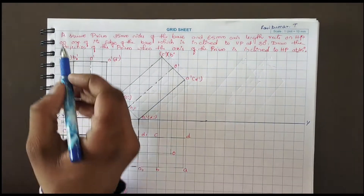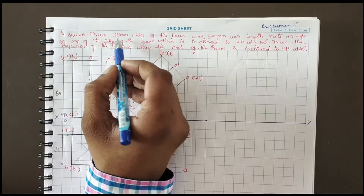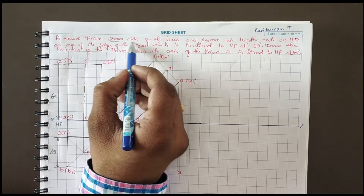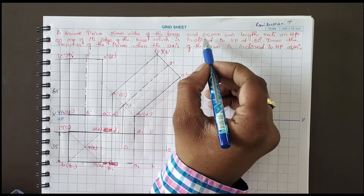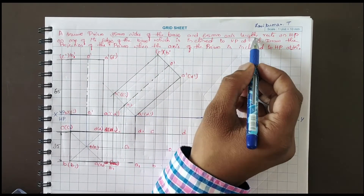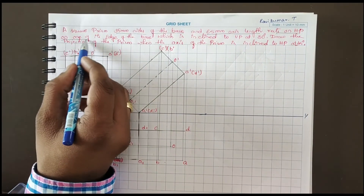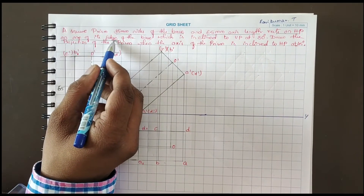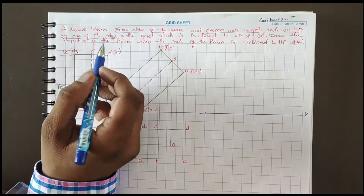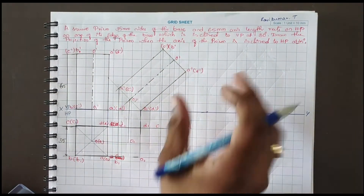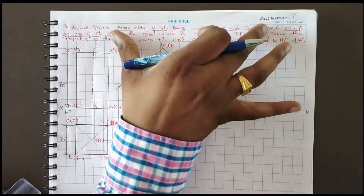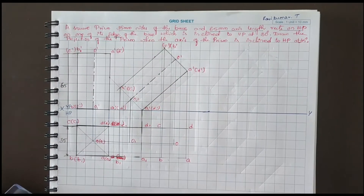The problem is: a square prism with 35 mm sides of base and 65 mm axis length rests on HP on one of its edges. So first, we will see how to construct the first position.